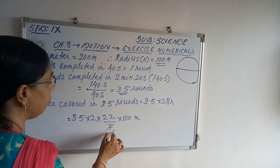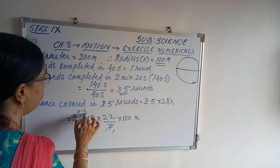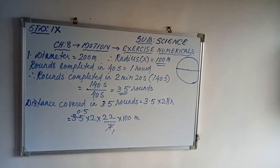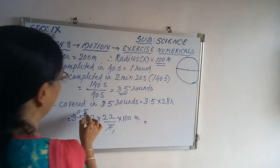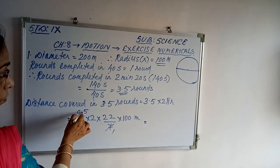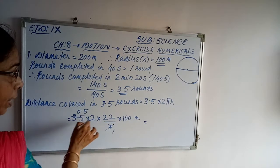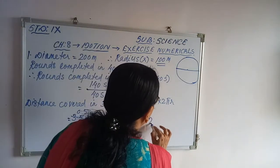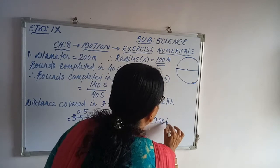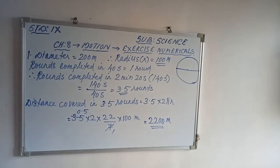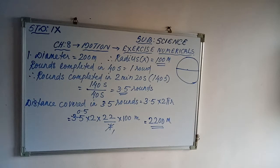After simplification: 3.5 times 2 times 22/7 times 100. The 7 and 3.5 simplify, and the zeros cancel, giving us 2200 meters. This is the distance covered in 3.5 rounds.